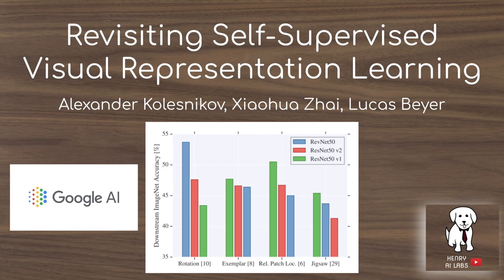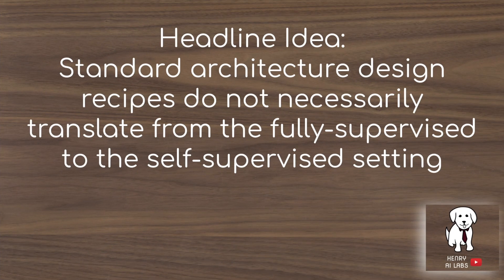This video will present a recent paper from Google AI, 'Revisiting Self-Supervised Visual Representation Learning.' The headline idea is that standard architecture designs and convolutional neural network advances that have been working in supervised learning tasks like ImageNet classification don't necessarily translate to self-supervised tasks such as predicting rotation, permutation of jigsaw puzzles, or the exemplar augmentation task.